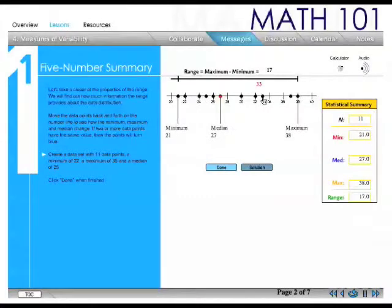Create a data set with 11 data points, a minimum of 22, a maximum of 35, and a median of 25. Click Done when finished.